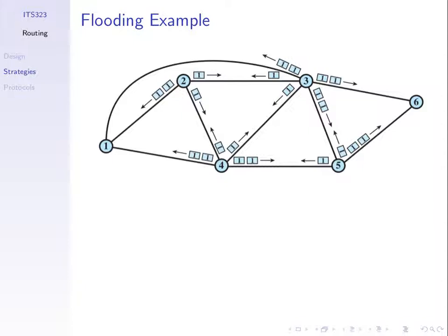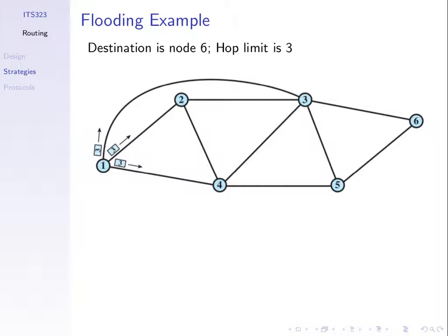If we used least cost routing or routed across the minimum number of hops instead of flooding, how many packets need to be transmitted? The least hop path from one to six is one, three, six. If we knew that path in advance, one to three is one transmission, three to six is two transmissions — just two transmissions total. But with flooding, we have 34 transmissions to get the same data to the destination. That's why flooding is very inefficient.